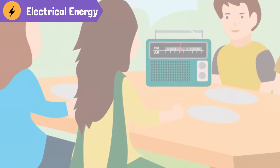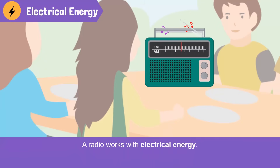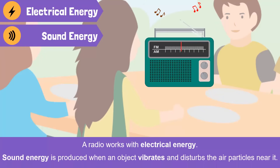Now they're listening to some cool music on the radio. It runs on electrical energy from the battery. What kind of energy is the radio producing? Sound energy is produced when an object vibrates and disturbs the air particles near it. Thus, the energy of a vibrating body spreads out in the form of waves. When these waves enter our ear, we can hear the sound.